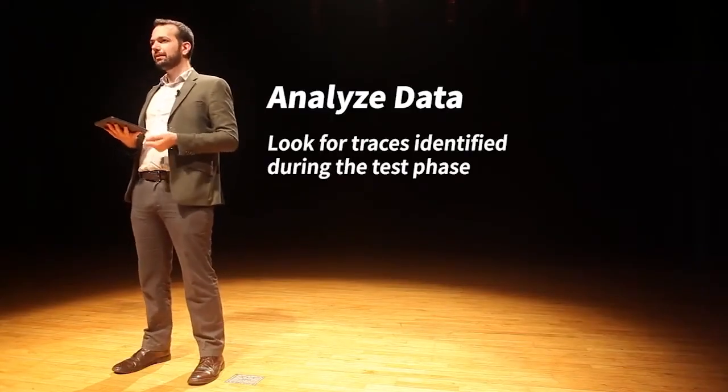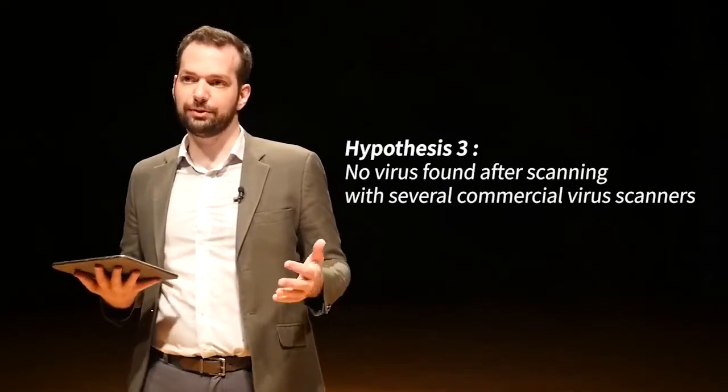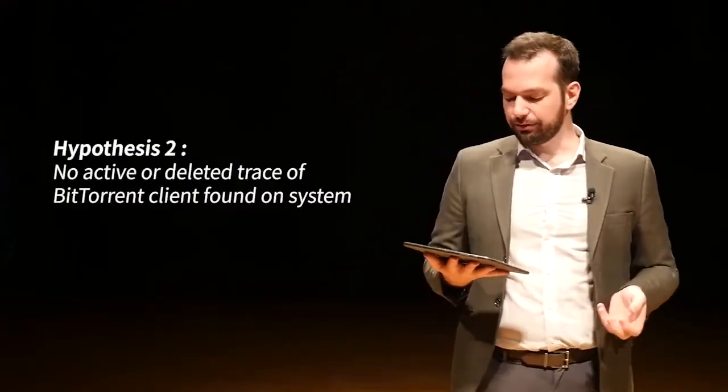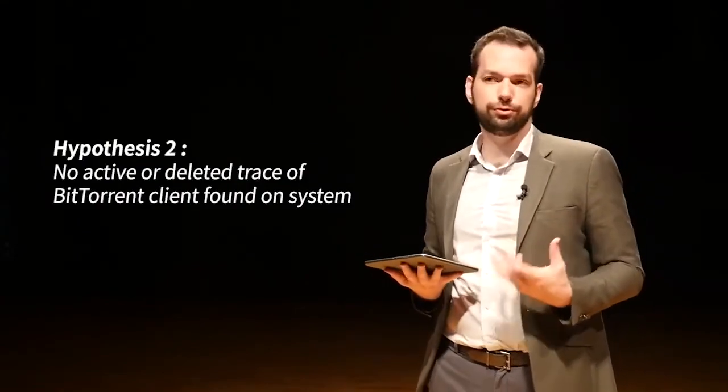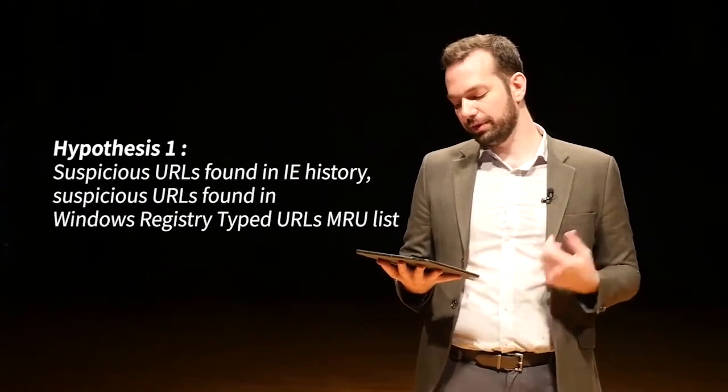We look for traces identified during the test phase. For example, for hypothesis three - that a virus was on the system - we scanned the computer using something like VirusTotal with many different virus scanners and didn't find any viruses. So we have some evidence supporting that there was not a virus on the computer. For hypothesis two, we see no active or deleted traces of BitTorrent clients, so we have no supporting evidence that BitTorrent was used. For hypothesis one, suspicious URLs were found in Internet Explorer history and in the Windows Registry typed URL MRU list, providing some traces supporting Internet Explorer may have been used.